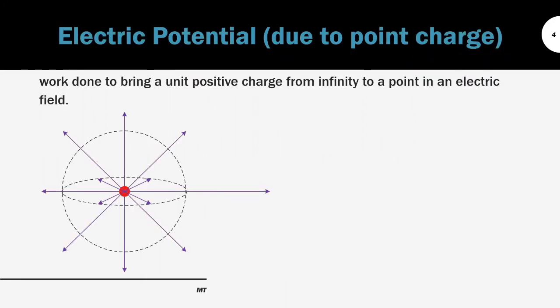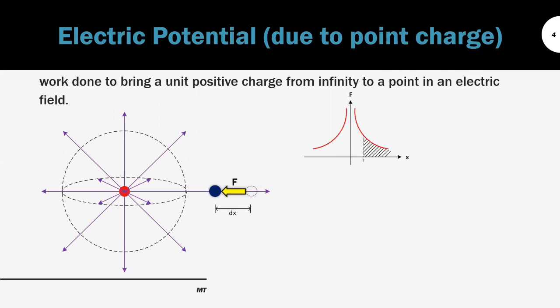First, we begin with electric potential due to a point charge. It is defined as the work done to bring a unit positive charge from infinity to a point in an electric field. When we bring the point charge nearer to the source charge, work is done along the distance it moves. Since electrostatic force is inversely proportional to the square of distance, we can find the work done by determining the area under the graph of F against x using integration.